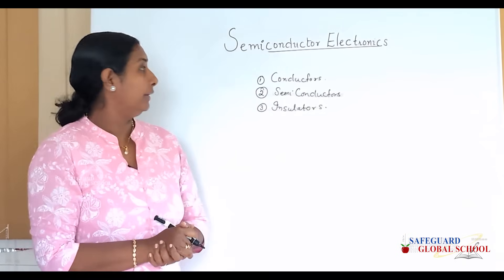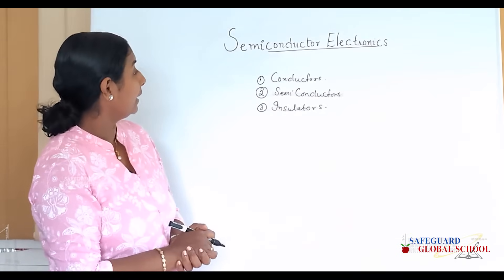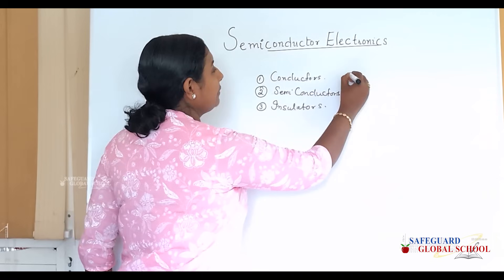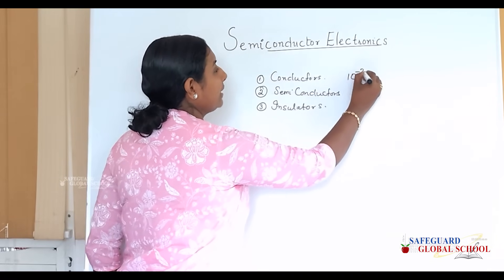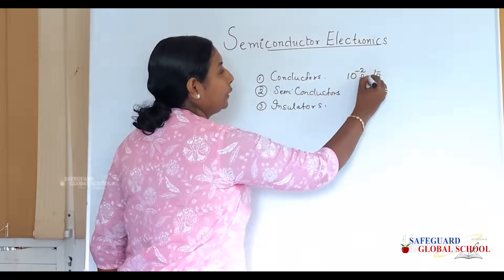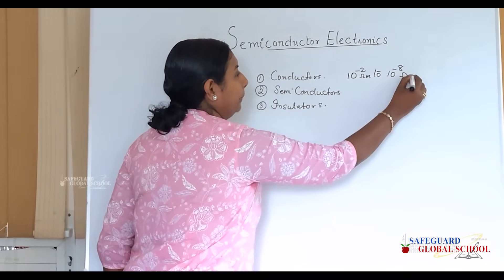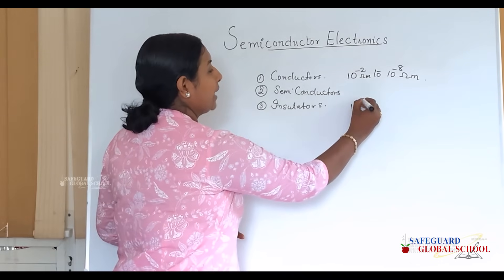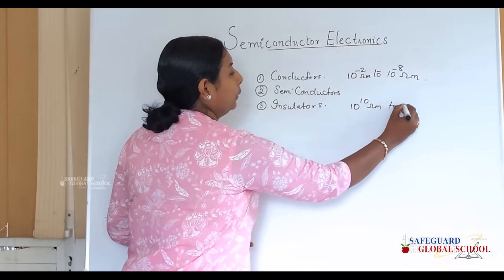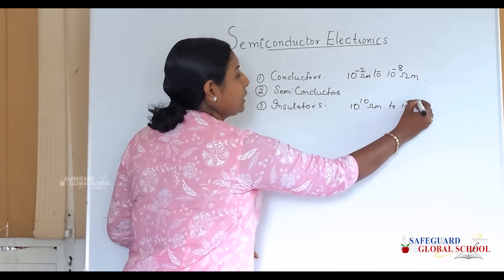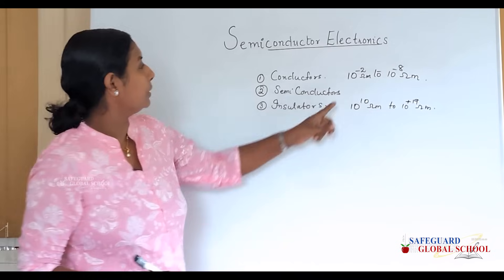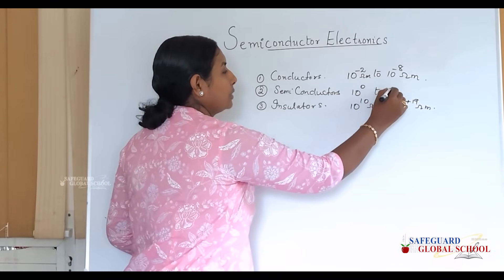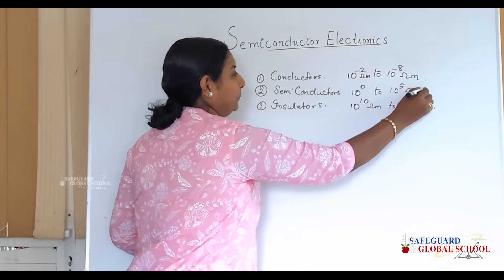These materials are different on the basis of their conductivity or resistivity. In conductors, the resistivity ranges from 10⁻⁸ to 10⁻² ohm-meter. For insulators, it ranges from 10¹⁰ to 10¹⁹ ohm-meter. For semiconductors, the resistivity ranges from 10⁰ to 10⁵ ohm-meter.